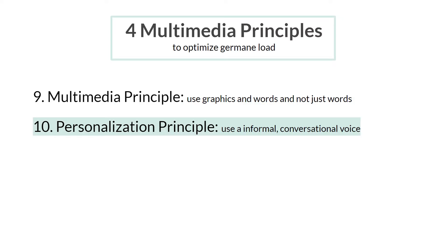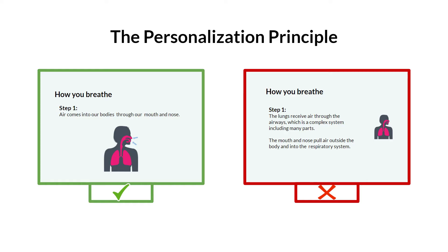Number ten, the personalization principle. People learn best from a more informal, conversational voice than a formal voice. How to use this principle? Consider the age of your learners. Keep your language simple and casual. Avoid using complex words or overly professional text. Use first and second pronouns like you, I, we. This will help you connect with your learners.